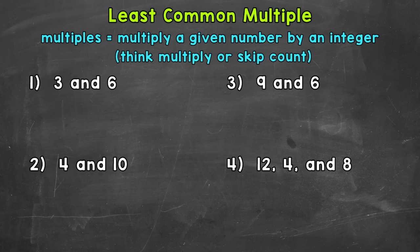Let's start with some multiples of three. And remember, think multiply or skip count. So let's write the first five multiples of three, and then we'll go from there. So three times one is three, three times two is six, three times three is nine, three times four is 12.